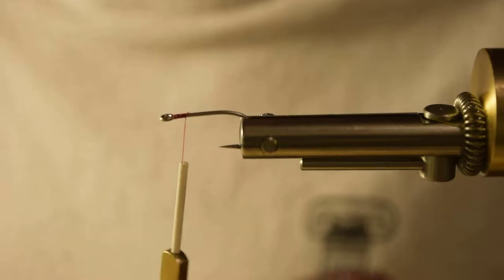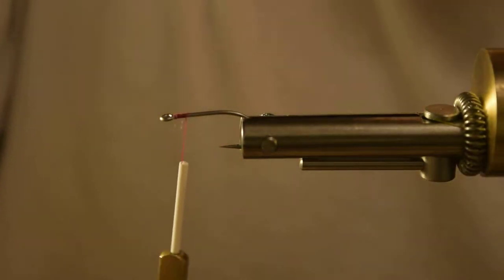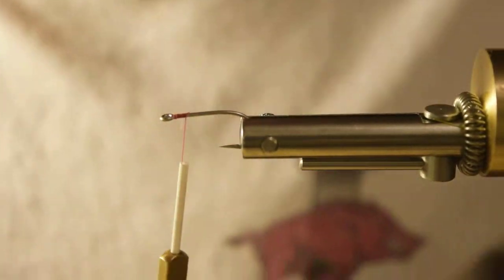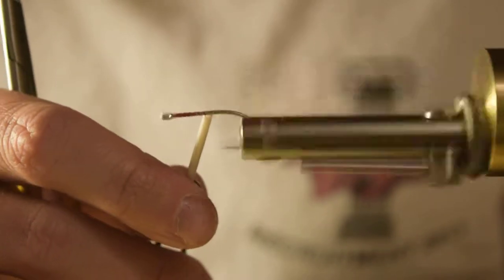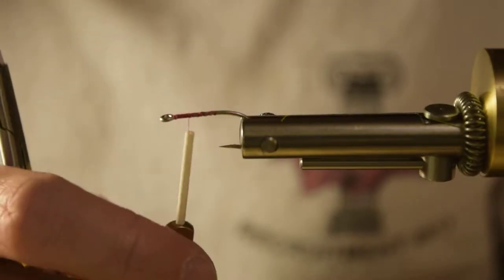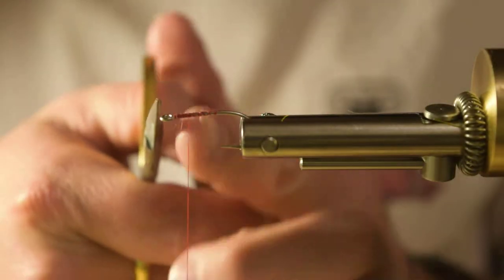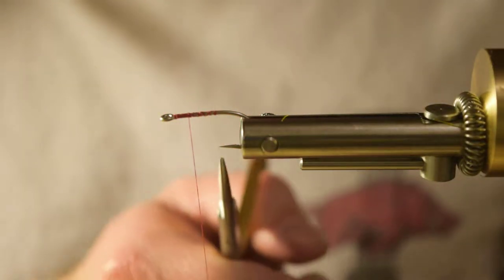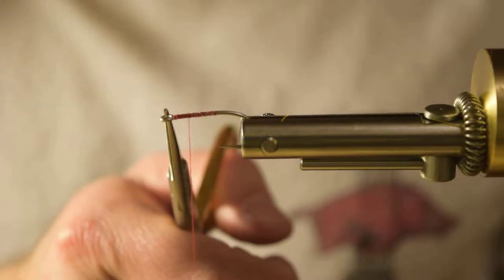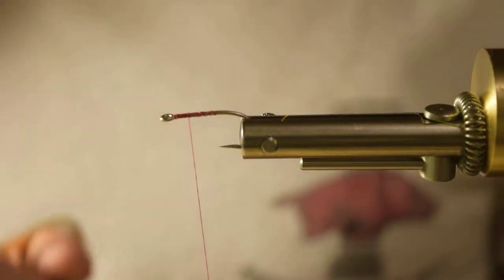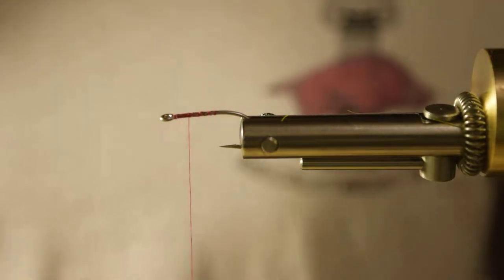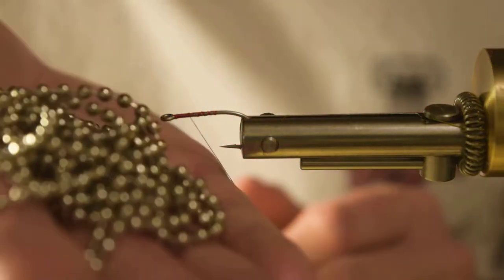I'll use clear monofilament a lot of the time and it'll take on whatever color I'm tying with. We're going to lay down a base of thread and we're going to come about, draw a mental image between the hook point and the eye of the hook, and we're going to come about a third of the way back. That's where we're going to put our eyes in. And what we're going to be using for our eyes is this bead chain.